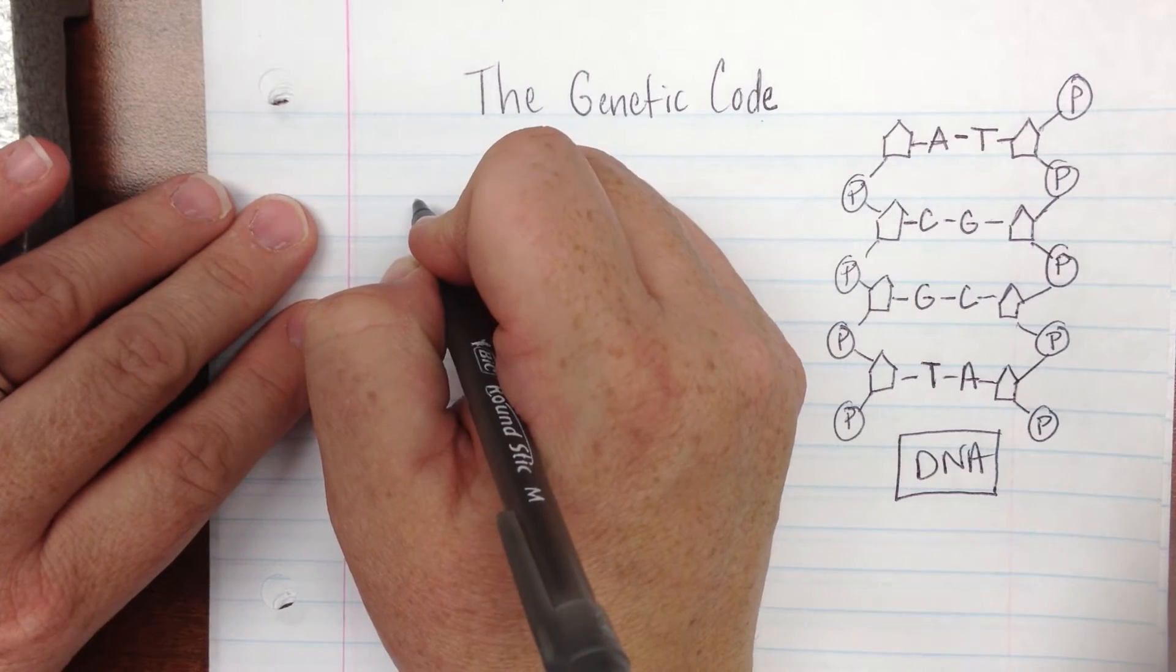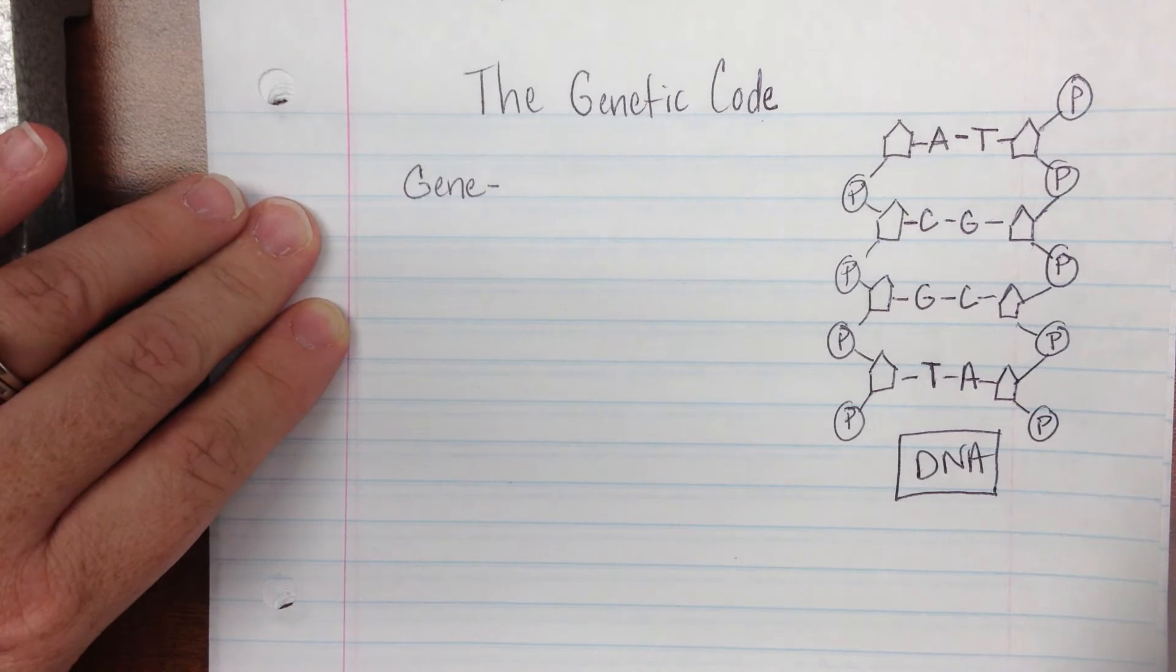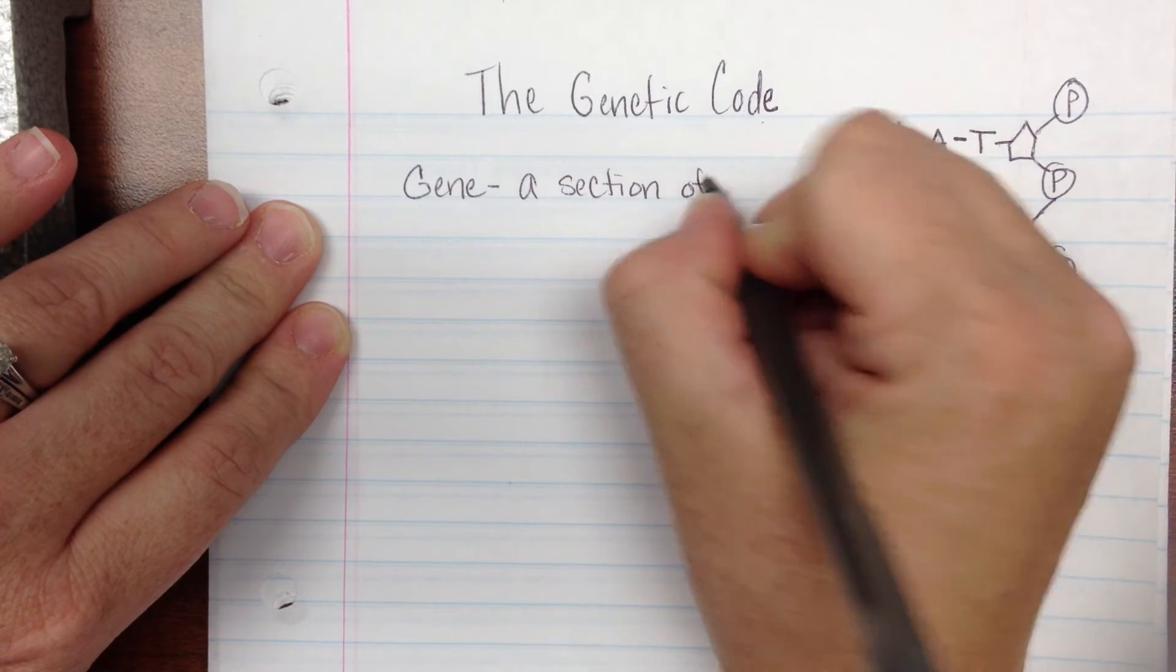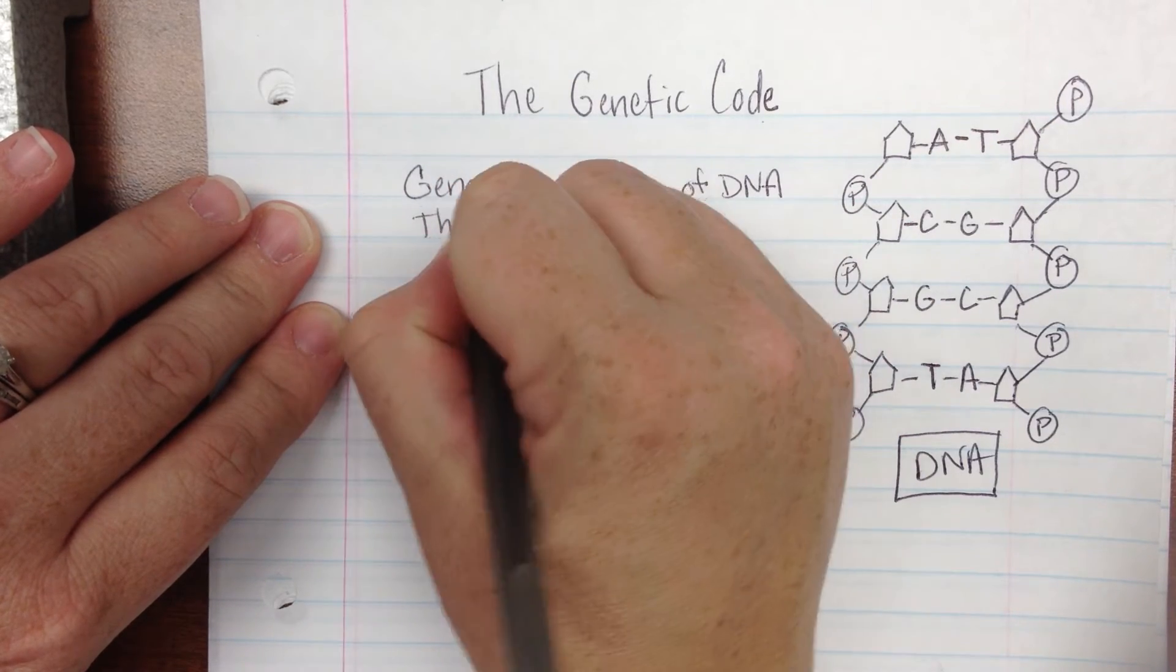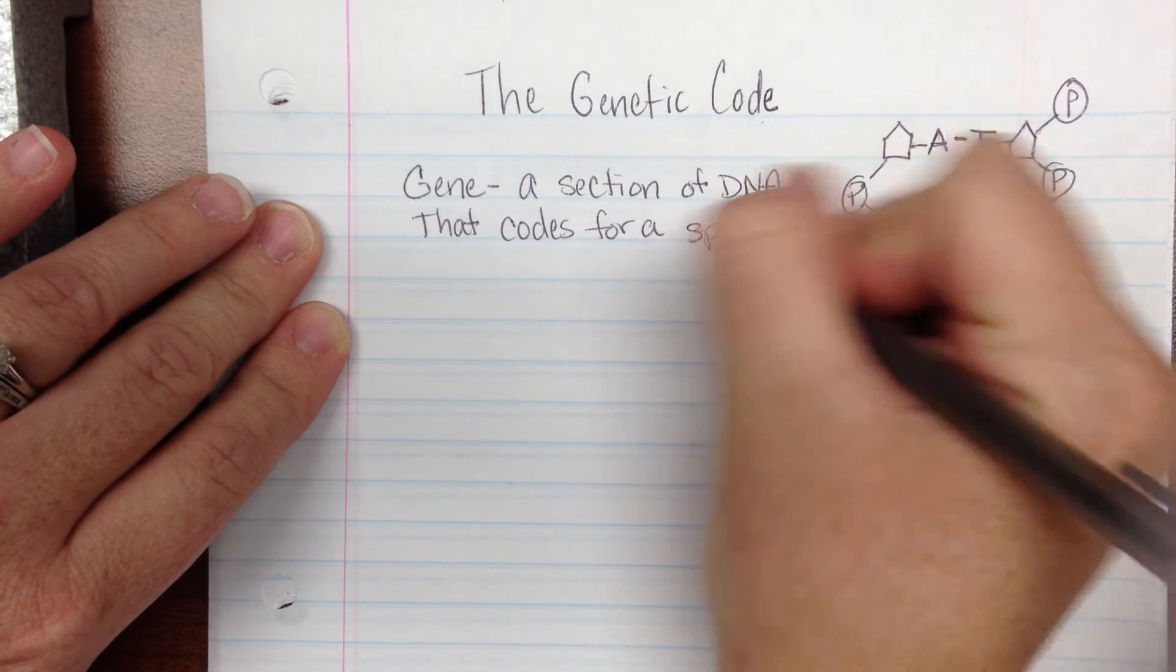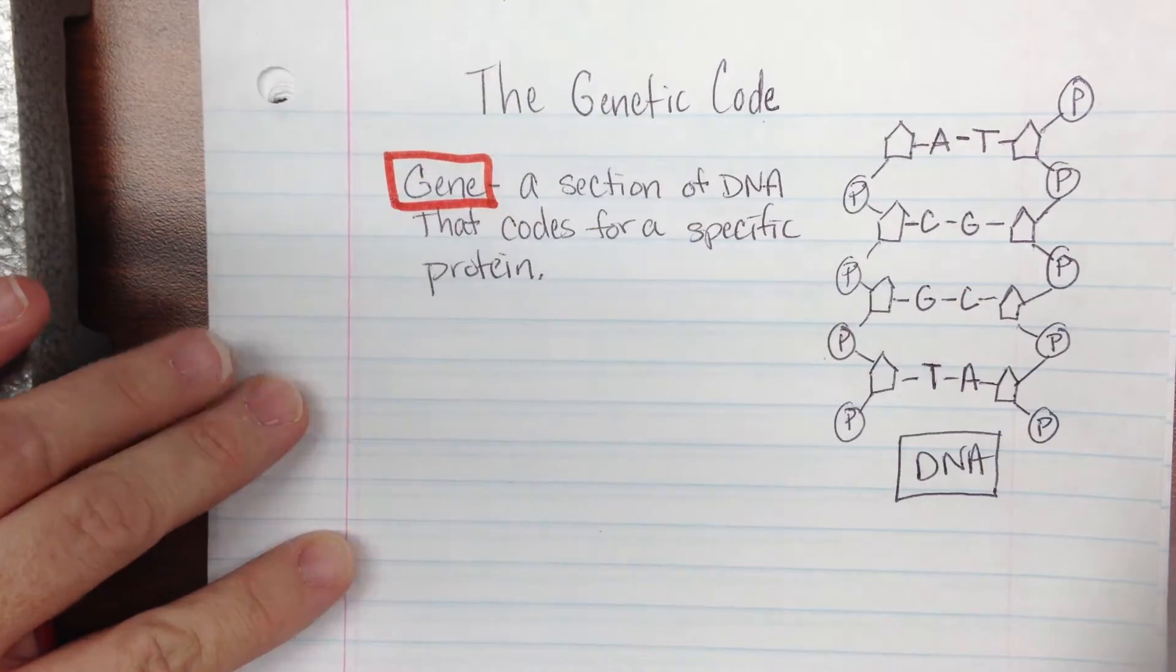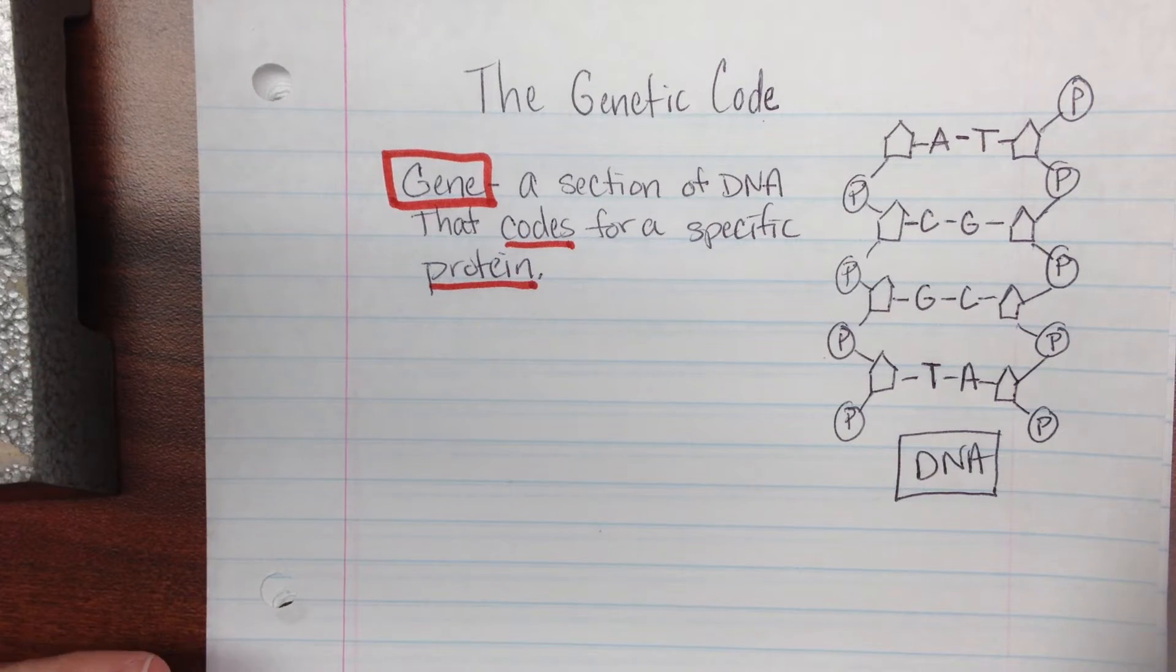So let's come back over to this side, and let's focus on some of the vocabulary. The first word we need to understand is the word gene. Notice the different spelling. It's not like your blue jeans. That would be J-E-A-N-S. This is G-E-N-E. This is a section of DNA that codes for a specific protein. And I'm going to underline the word gene here to make it stand out, or put a little box around it. And I'm going to emphasize that it codes for a protein.